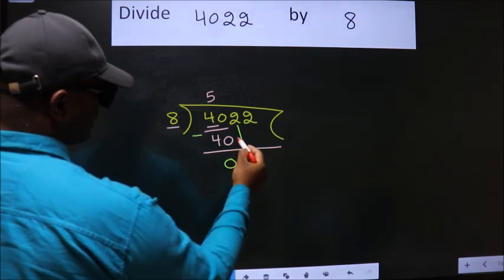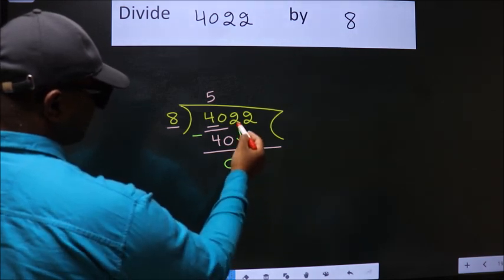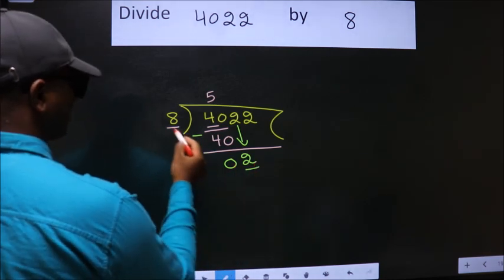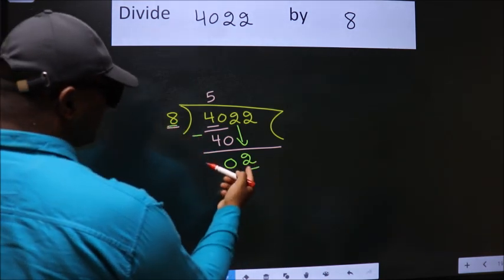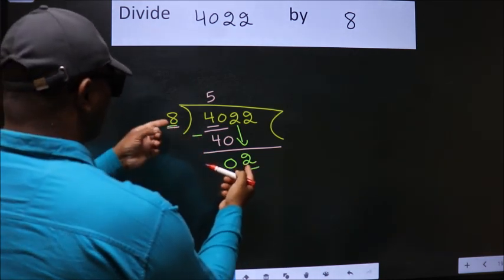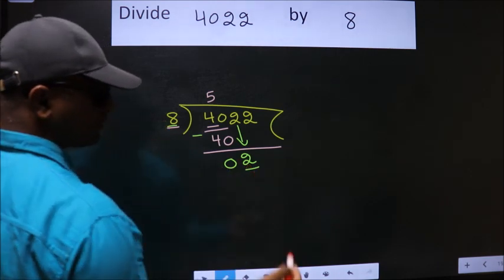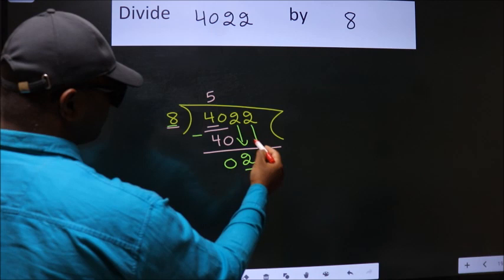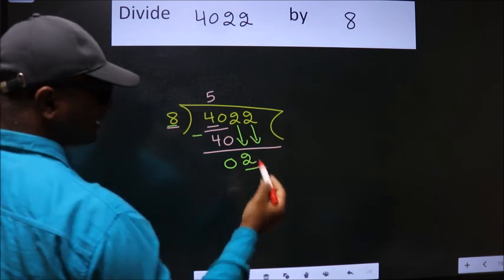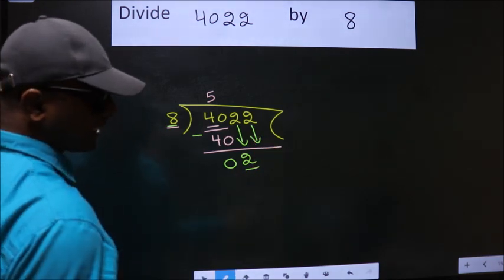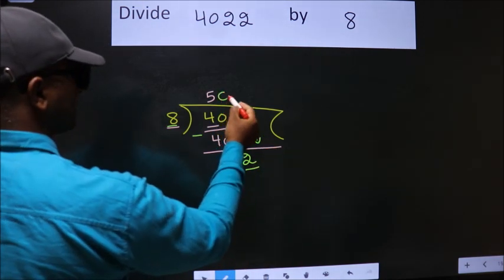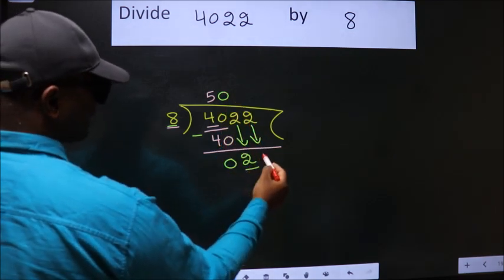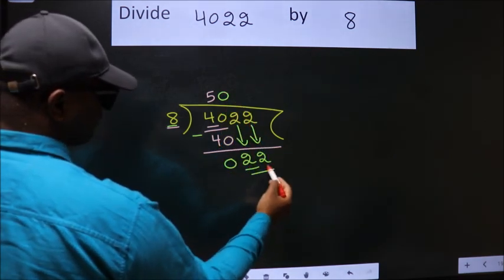After this, bring down the beside number — so 2 comes down. Here we have 2, and here 8. 2 is smaller than 8, so we should bring down the next number. The rule to bring down the second number is to put 0 here — then only we can bring down this number. So we get 22.